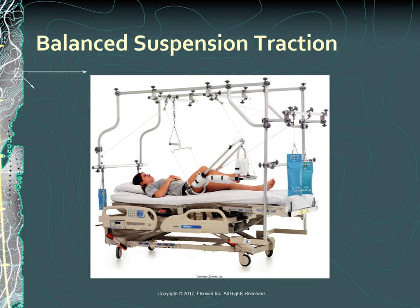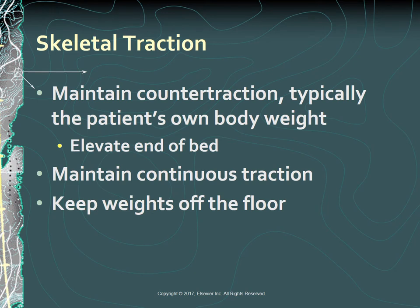When traction is used to treat fractures, forces are usually exerted on the distal fragments to obtain alignment with the proximal fragment. One of the more common types of skeletal traction is balanced suspension traction. Fracture alignment depends on the correct positioning and alignment of the patient while the traction forces remain constant. For extremity traction to be effective, forces must be pulling in the opposite direction. Counter-traction is commonly supplied by the patient's body weight or by weights pulling in the opposite direction, and may be augmented by elevating the end of the bed. Traction must be maintained continuously—keep the weights off the floor and moving freely through the pulleys.